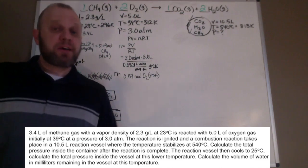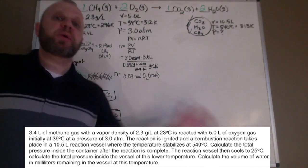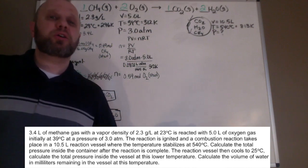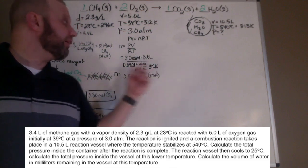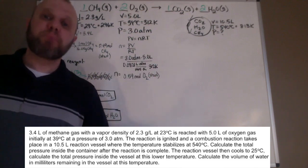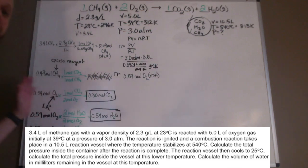Now I have the amount for each of those things in the container. Some of you might be asking, when we did stoichiometry, we went to grams. How come we didn't go to grams here? We didn't need grams because we're using PV equals nRT and moles.